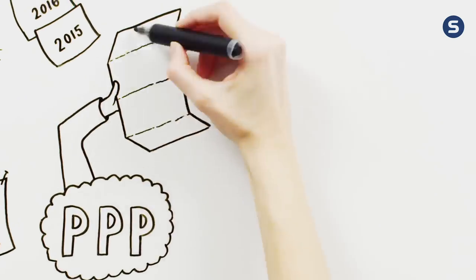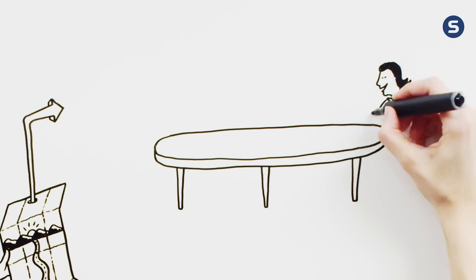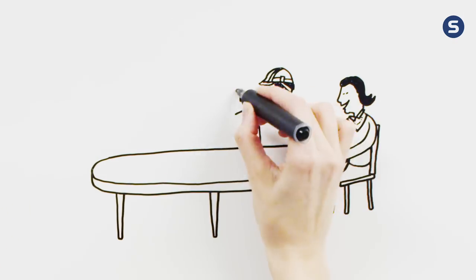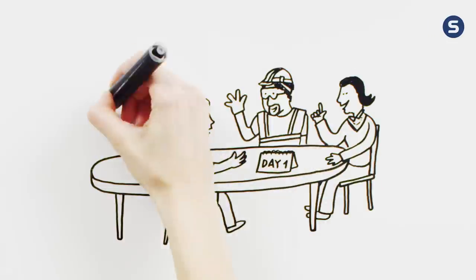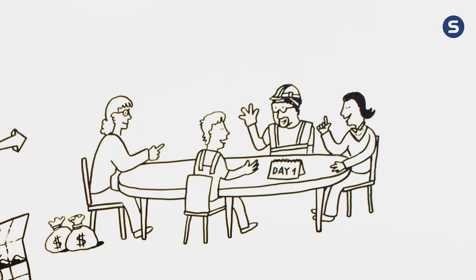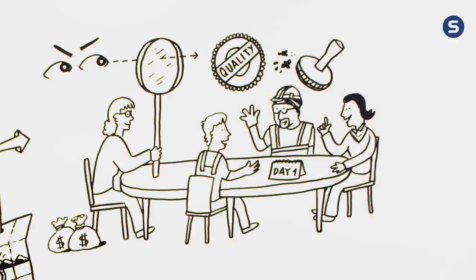Now let's assume that a road needs to be built. With the PPP method, advisors, designers, contractors, and operations and maintenance providers are around a table working together from day one. They also invite along someone who can finance the project. This equity partner takes an important role in ensuring the quality of the project.